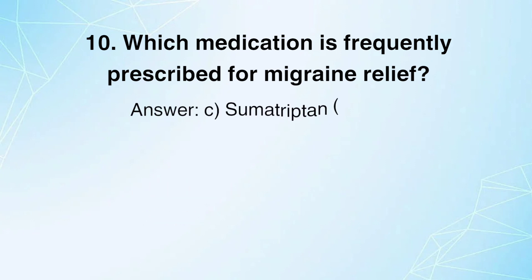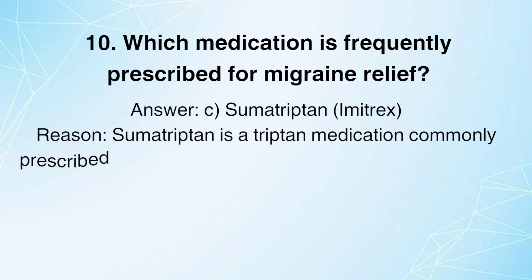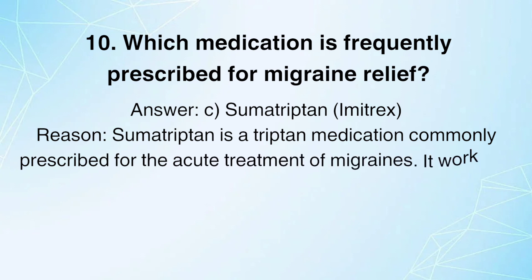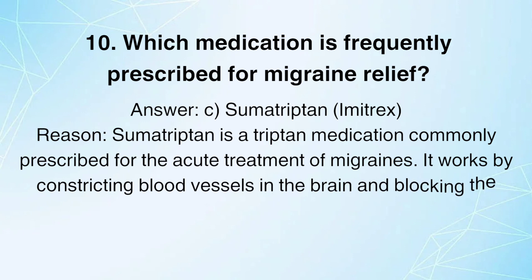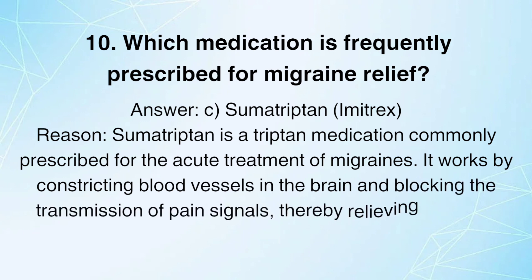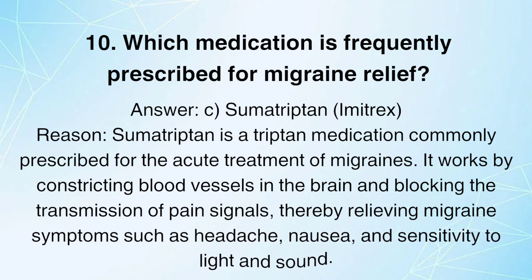Sumatriptan (Imitrex). Reason: Sumatriptan is a triptan medication commonly prescribed for the acute treatment of migraines. It works by constricting blood vessels in the brain and blocking the transmission of pain signals, thereby relieving migraine symptoms such as headache, nausea, and sensitivity to light and sound.